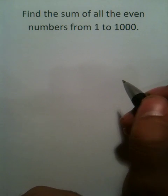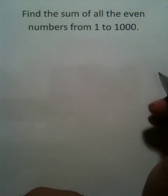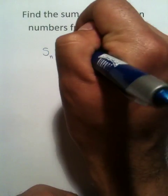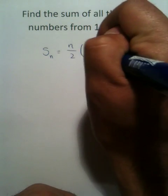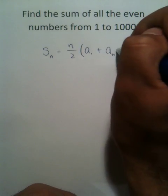To do this without having to add up every single even number, you're going to need this formula right here. S sub n equals n over 2 times the quantity of a sub 1 plus a sub n.